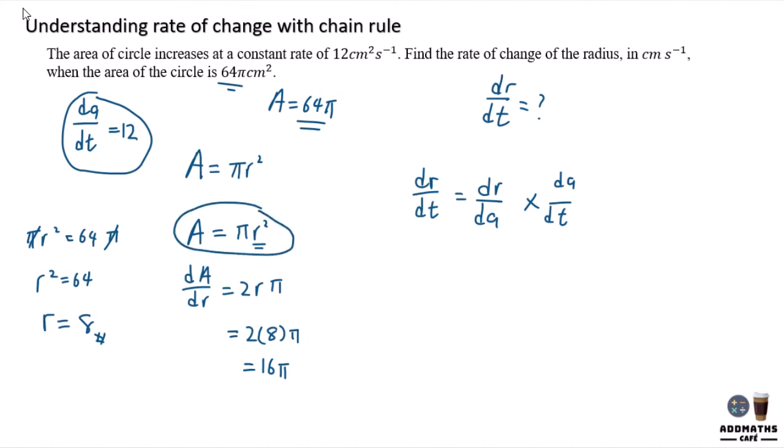Don't substitute your r at the beginning because you are required to find dA/dr instead. To find dr/dA, since dA/dr is 16π, dr/dA will be 1 over 16π times dA/dt which is 12. So you'll have 3 over 4π for your dr/dt.